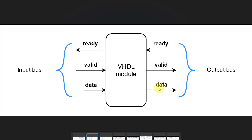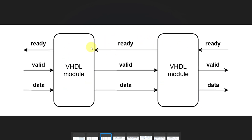Notice that the ready and valid signals, as well as the data signal, have opposite directions on the receiving side versus the sending side, but they still have the same names. This means we can connect one module to the next by connecting the ready signal from the output side of the sender to the ready signal on the input side of the receiver, and the same with the valid and data signals. This makes it easy to connect buses between modules because ready signals go to ready, valid signals go to valid, and data goes to data.